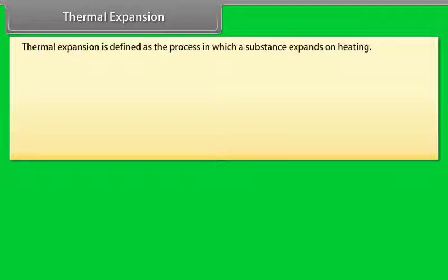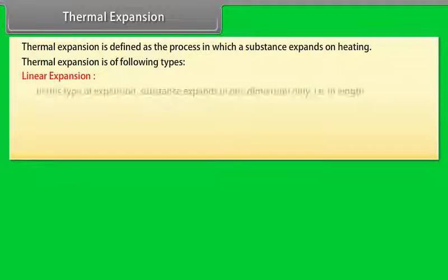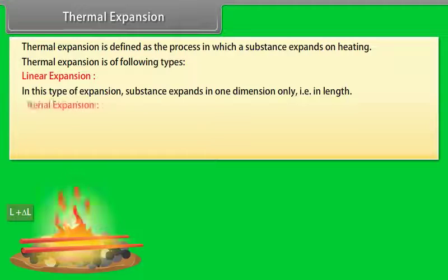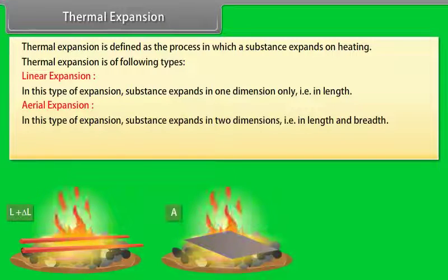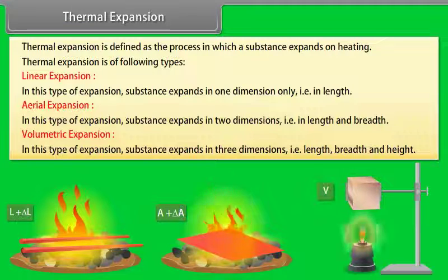Thermal expansion is defined as the process in which a substance expands on heating. It is of three types: (1) Linear expansion — the substance expands in one dimension only, i.e., in length; (2) Aerial expansion — the substance expands in two dimensions, i.e., length and breadth; (3) Volumetric expansion — the substance expands in three dimensions, i.e., length, breadth, and height.